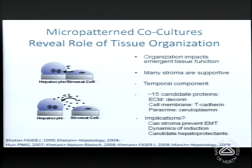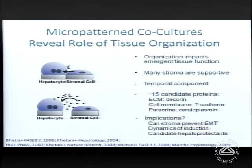To summarize what we've learned: organization impacts emergent collective tissue function; many stroma are supportive; there's a temporal component; and we know several proteins these fibroblasts make that we think are important, though no single one or combination produces the full rescue effect. Interestingly, while in cancer we think of stromal cells as driving EMT progression, here fibroblasts are actually preventing EMT — suggesting normal stroma may serve a role in rescuing from EMT. Some of these secreted proteins are potentially therapeutic hepatoprotectants.